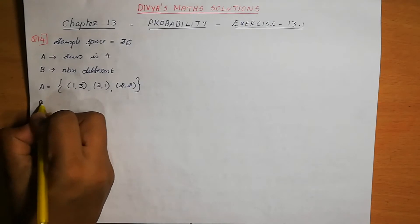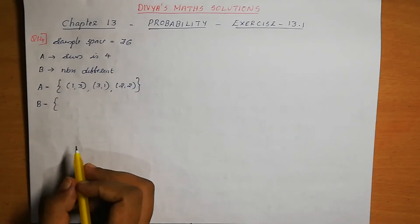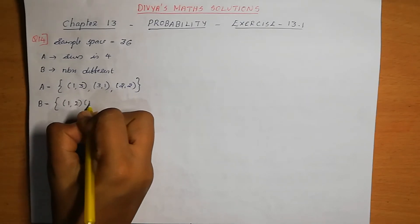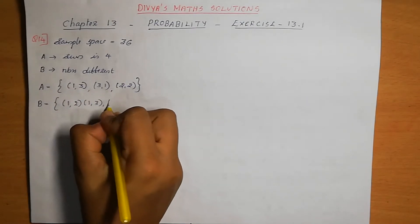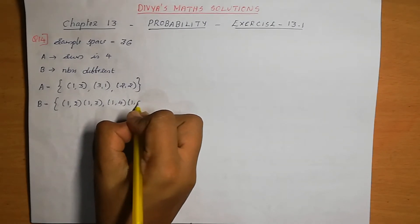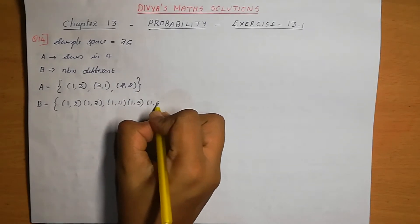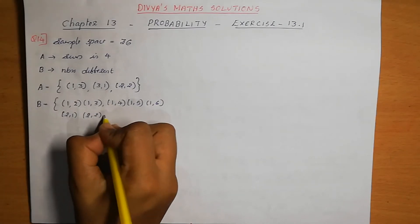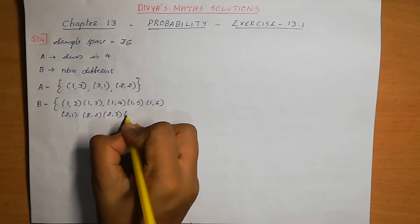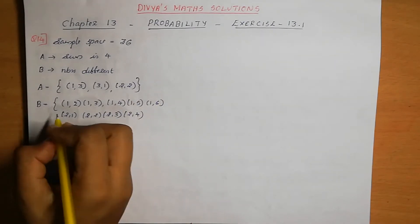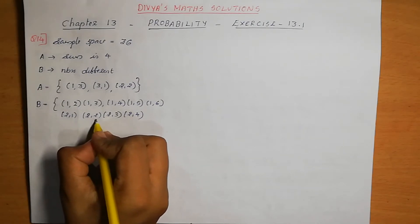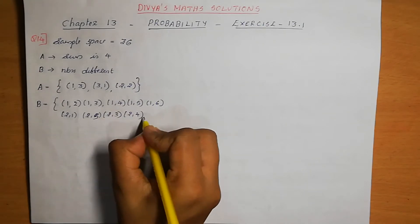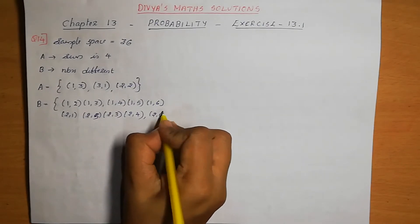For event B, numbers appearing on both dice are different. Starting with first die 1: pairs are (1,2), (1,3), (1,4), (1,5), (1,6). For first die 2: (2,1), (2,3), (2,4), (2,5), (2,6) — note (2,2) is not possible since numbers must be different.